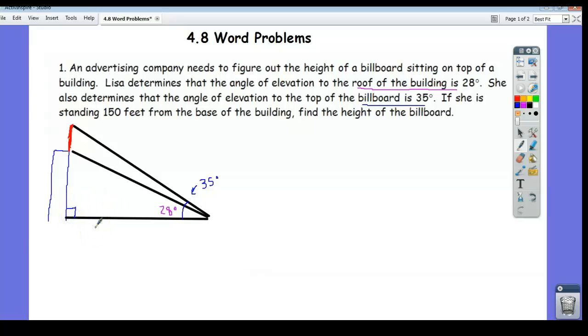And so now what are we trying to find? It says if she's standing 150 feet from the base of the building, find the height of the billboard. Alright, so the height of the billboard is going to be represented by what we'll call it H. So we need to find the height of this little red, basically this little red section of the triangle.